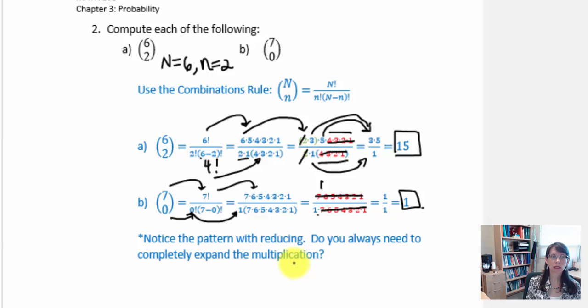So notice the pattern with reducing. Do you always need to completely expand the multiplication? This thought will be helpful when we look at the next example.